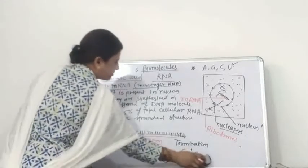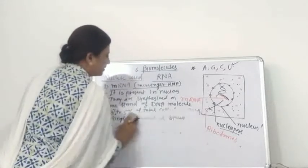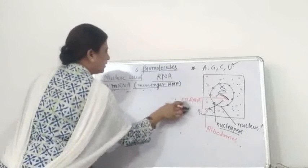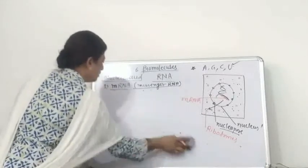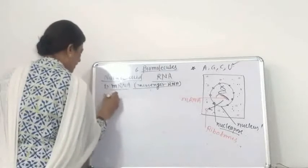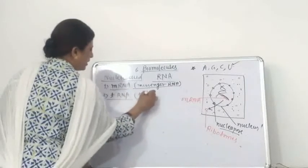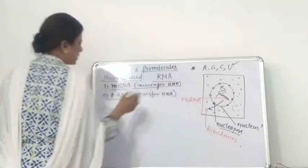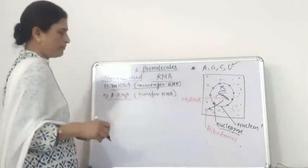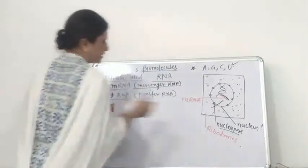The second type of RNA is tRNA, known as the transfer RNA. It transfers the amino acid from the amino acid pool to the site of protein synthesis. The ribosomes are the site of protein synthesis.